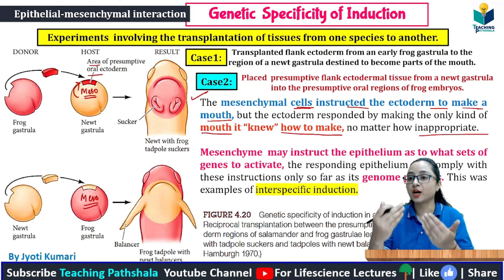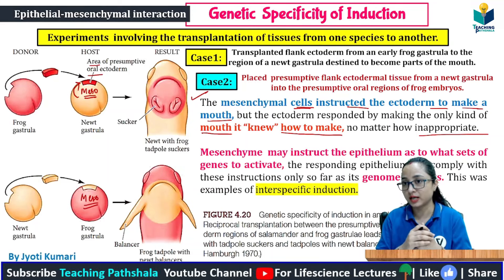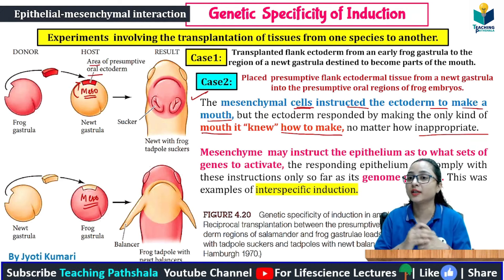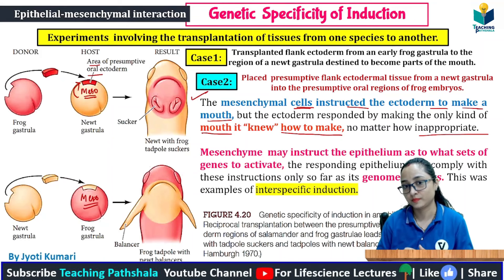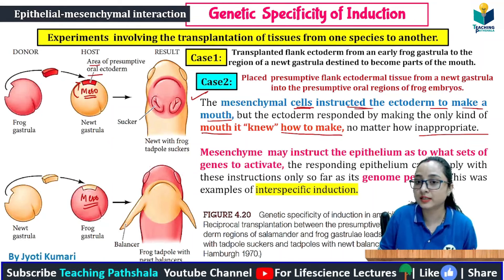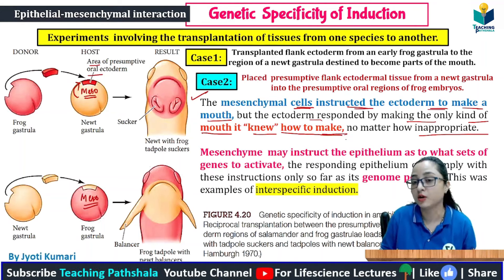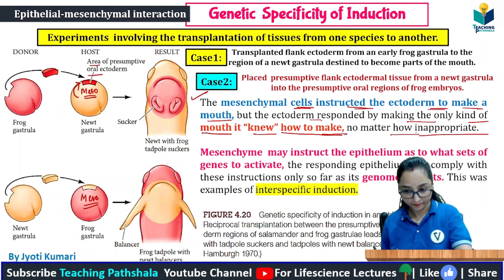So when the instruction is given to make a mouth, the mouth is being made, but the genes that are actually activated are those present in the responding tissue. The mesenchymal cell instructed the ectoderm to make a mouth, but the ectoderm responded by making the only kind of mouth it knew how to make, no matter how inappropriate.